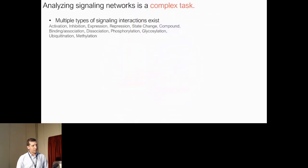When we try to analyze these, we come across a number of challenges. First of all, these signaling networks consist of multiple types of interactions that are usually concurrent with each other.